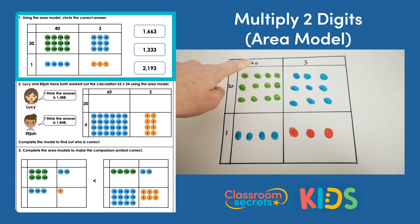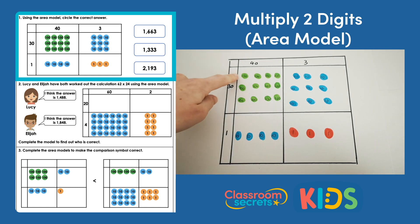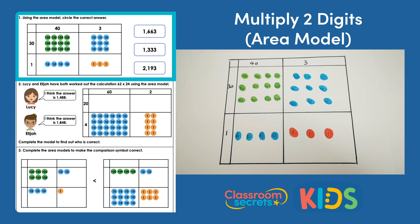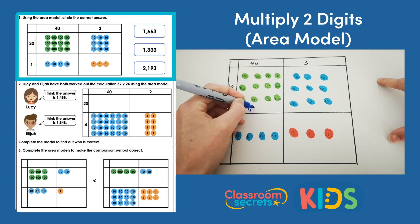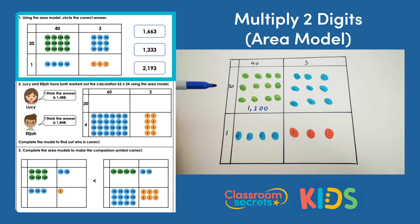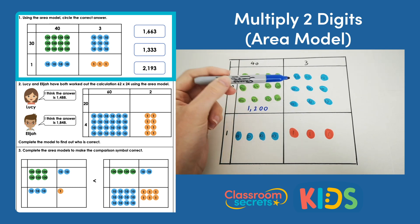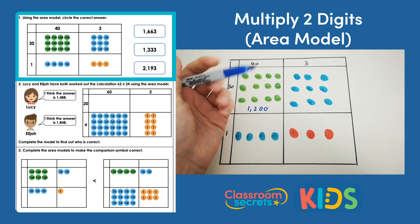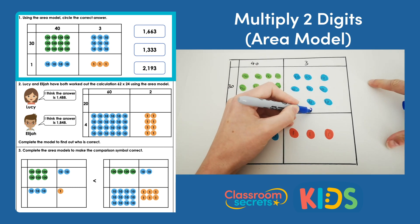So 40 times 30 should give us 1,200, or 12 hundreds. We've got 12 hundreds, which is the same as 1,200. Then we would do 3 times 30 — that's 90 — so we should have 90 in that box, and we've got 9 tens, so that's 90. So that's correct.